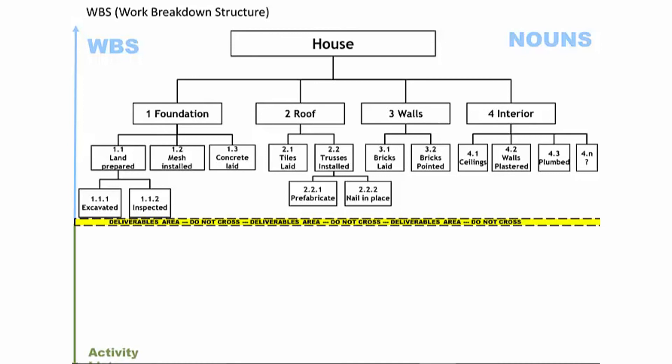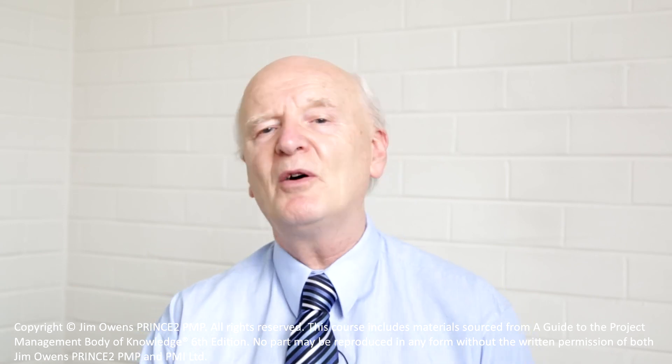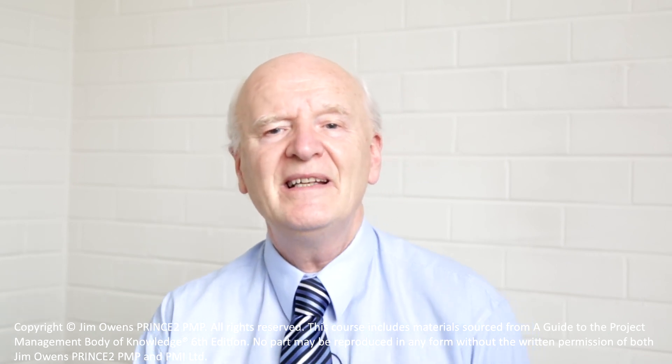For every work package in the Work Breakdown Structure, you decompose it into the activities required to produce it. You can only decompose work packages — not planning packages or control accounts. The activity list must contain only activities, never deliverables. In contrast to the WBS, which contains only nouns, the activity list contains only verbs. That covers about two-thirds of the Work Breakdown Structure topic — I hope you found something of value in this lesson.